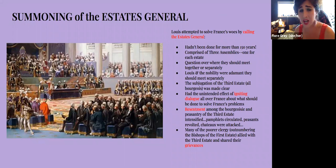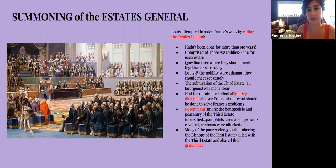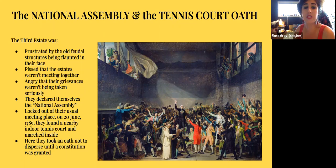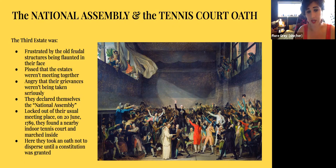Pamphlets started circulating, people were drinking lots of coffee in cafes and getting really agitated. Peasants were revolting and chateaux were under attack. Many of the poorer clergy — those poor parish priests — were allied with the third estate and shared their grievances. Frustrated by old feudal structures, the third estate declared themselves a National Assembly. Locked out of their usual meeting place on June 20th, 1789, they marched to a nearby indoor tennis court and here took an oath not to disperse until a constitution was granted.